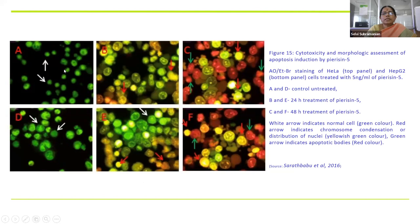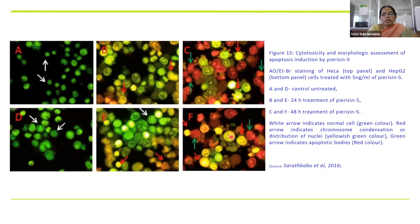This is a picture of cytotoxicity and morphologic assessment of apoptosis induced by pyresin 5. A and D are untreated controls showing normal cell appearance. B and E are 24 hours treatment, and C and F correspond to 48 hours. Normal cells appear green in color. As DNA fragmentation and chromosome condensation progress, you see a yellowish-green distribution of nuclei - the nuclei are fragmented and distributed all over the cell. In a normal eukaryotic cell the nucleus should be in one place, but because of the toxicity of this protein, it is fragmented and distributed throughout.